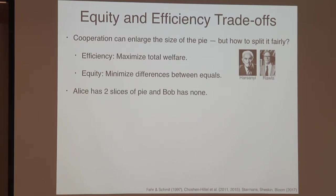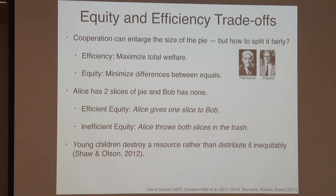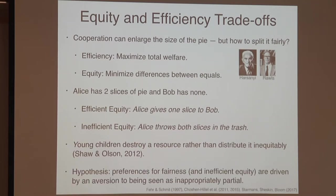Efficient equity: Alice has two slices of pie and Bob has none, and she gives one to Bob — the world's just as efficient but more equitable. There's also inefficient equity, where Alice just throws both slices in the trash — now everyone's equally well off but it's much less efficient. My collaborator Alex Shaw showed that young children will actually do things like this. In order to preserve equity, they'll throw away resources, because they don't want to seem impartial. The hypothesis is that a preference for fairness, particularly inefficient equity, might be driven by an aversion to being seen as inappropriately partial.